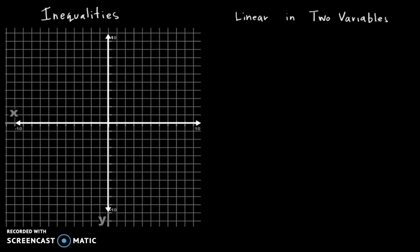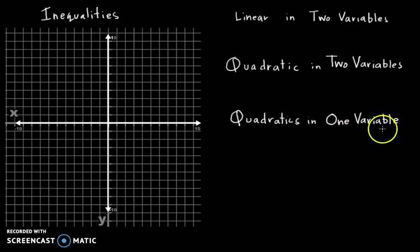We're going to go through the... there's really only three types of linear inequalities that you have to know. We have a linear in two variables. That's this guy here. And we have quadratic in two variables and we have quadratic in one variable. This is the three types. There's actually just these three types that you have to know about.